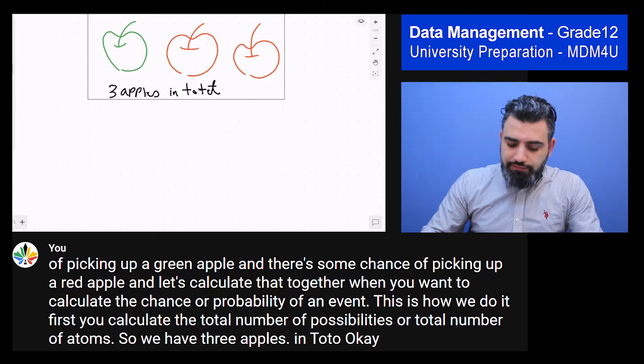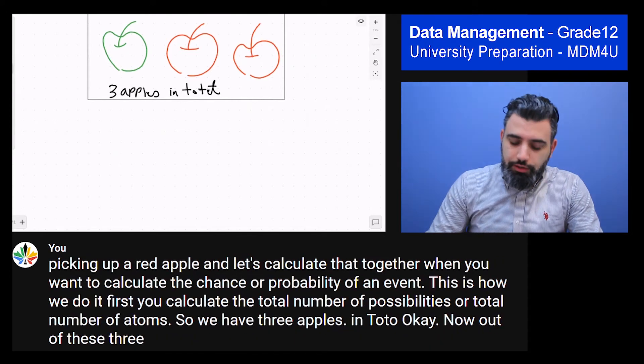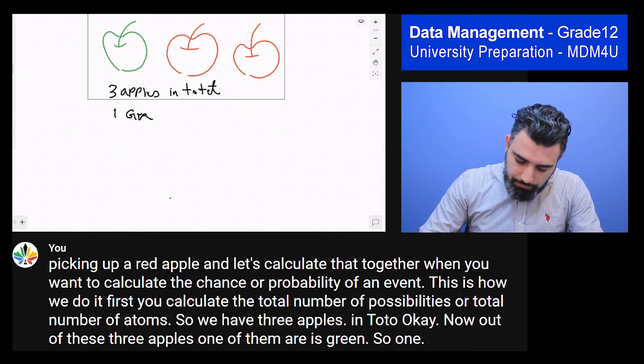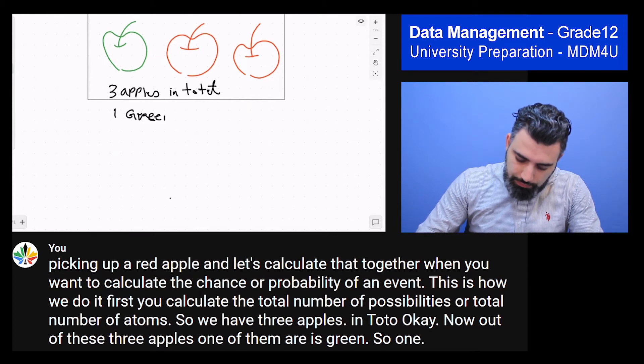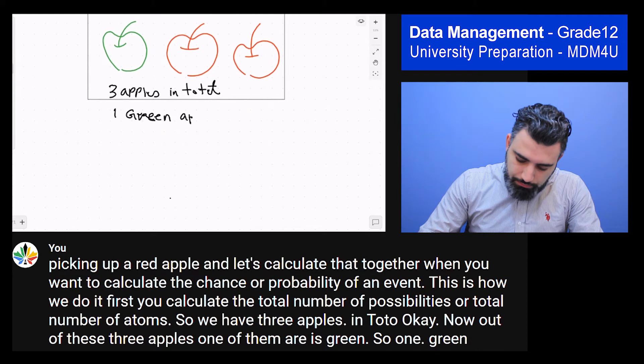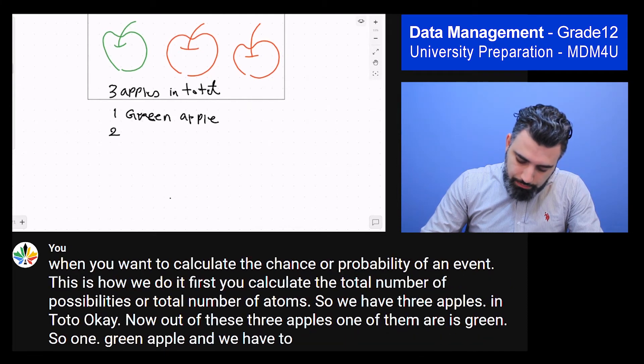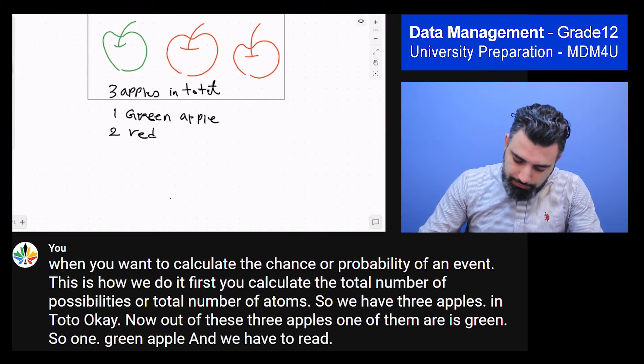Now out of these three apples, one of them is green. So one green apple. And we have two red apples.